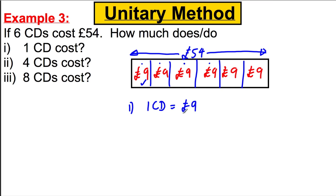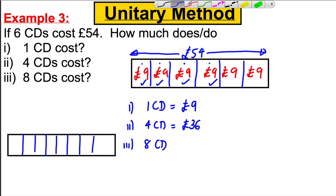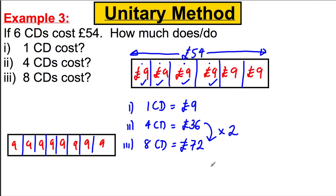Question one: how much is one CD? One CD is one box, so it's nine pounds. How much would four CDs cost? That would be four boxes: nine, eighteen, twenty-seven, thirty-six — so thirty-six pounds. And lastly, eight CDs — eight boxes of nine: nine, eighteen, twenty-seven, thirty-six, forty-five, fifty-four, sixty-three, seventy-two. So it'd be seventy-two pounds. A nice shortcut: if four CDs cost thirty-six, then eight CDs are twice that — so you could multiply by two.